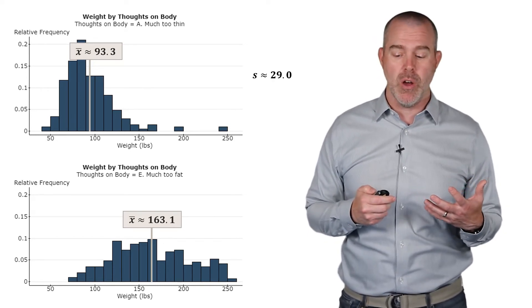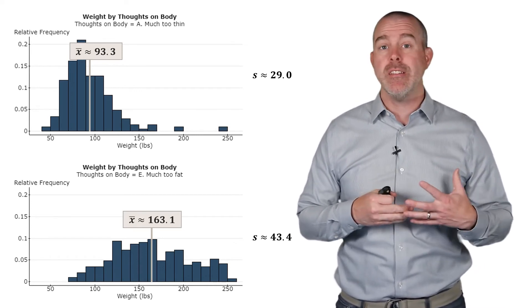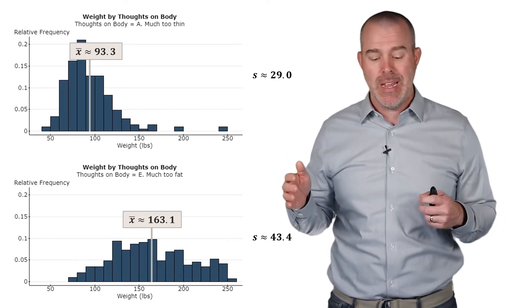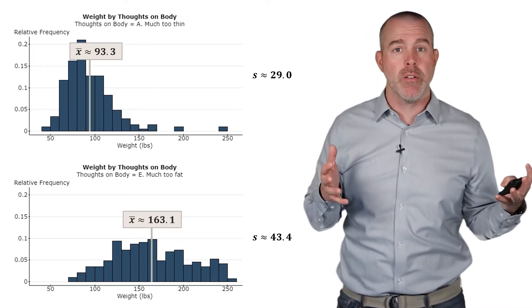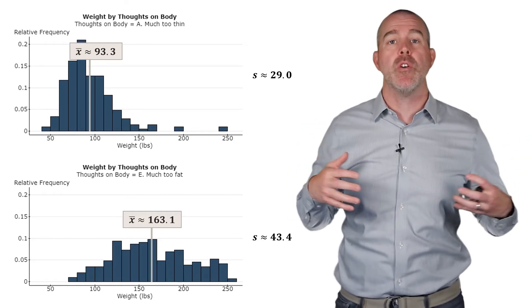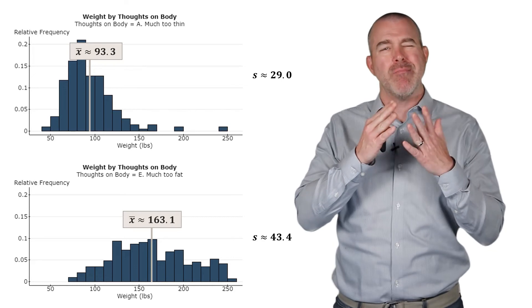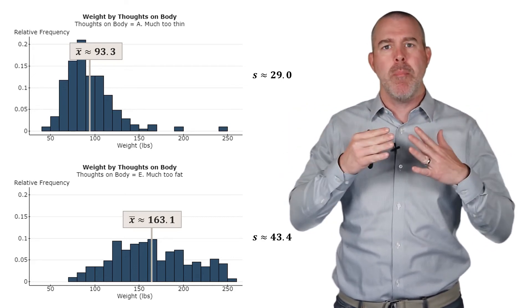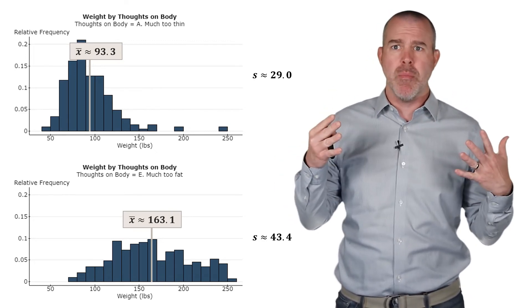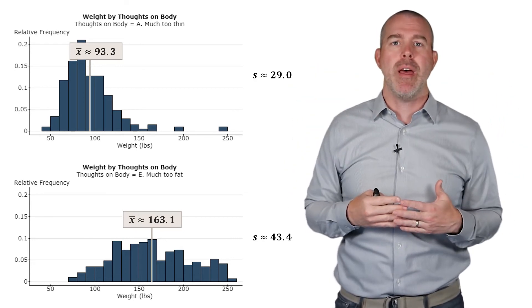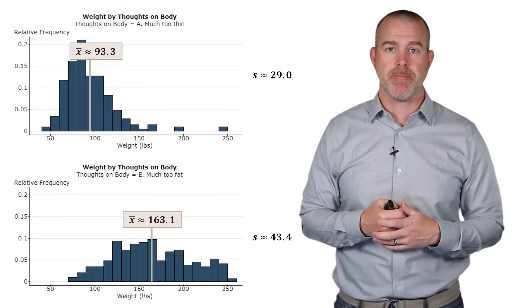There's also a difference in the spreads though. So the standard deviation for those who are much too thin is 29 pounds. And for those who are much too fat, it's actually very wide. And that's because there are some on the lower end that still feel they're much too fat. And then there are some at the very high end who are at over 200 pounds. And so there's a very wide range for those who feel that they are much too fat. So not only are the means different, but the spreads are different. Again, the standard deviation is about how far the typical observation is from the mean. It's about spread. And so the ones who feel they're much too thin are more condensed than those who feel about themselves that they are much too fat.